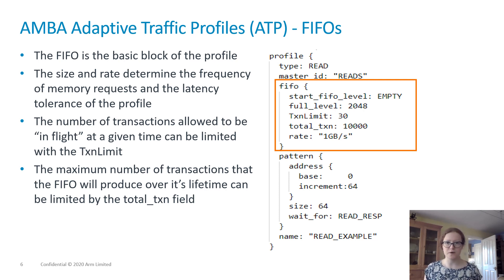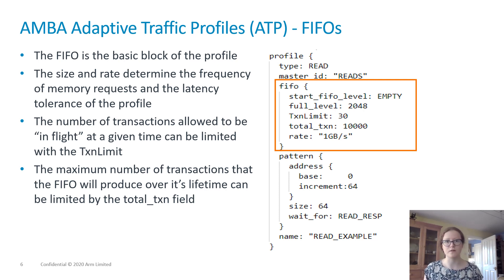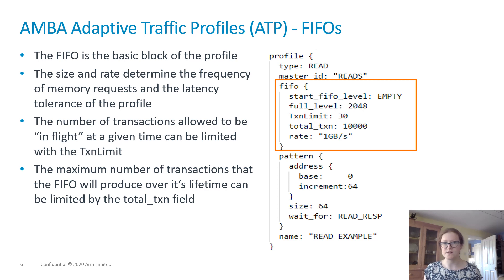The main component of a profile is the FIFO, a simple first-in, first-out buffer. The rate of a FIFO determines how quickly data is produced and put into the buffer for a write profile, or consumed from the buffer for a read. In combination with the size or full level, it determines the latency tolerance — how long the delay to a response can be — before the profile reports an underrun or an overrun. Other fields allow the user to limit the number of requests in-flight at any given time, or the total number of requests sent over the lifetime of the profile.